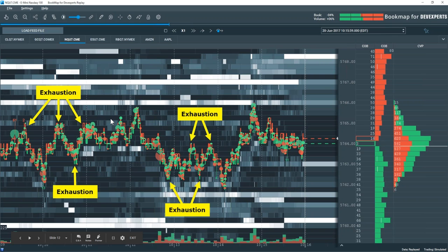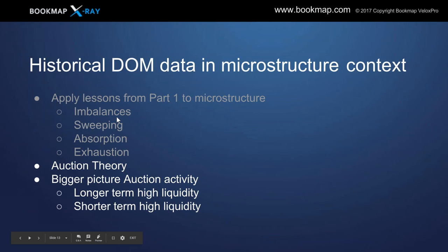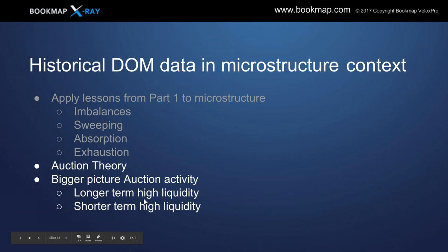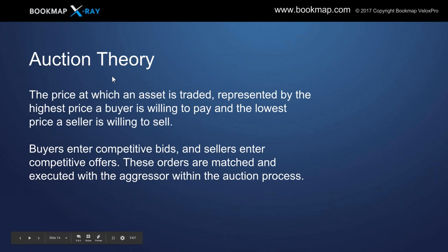We're going to use all of this information within the structure, and extrapolate this data into the microstructure in context — with auction theory and a bigger picture understanding of auction activity. Let's take a step back in auction theory. The price at which an asset is traded is represented by the highest price a buyer is willing to pay and the lowest price a seller is willing to sell. Buyers enter competitive bids, and sellers enter competitive offers. These orders are matched and executed with the aggressor within the auction process.